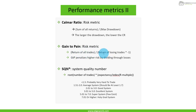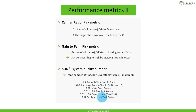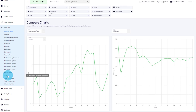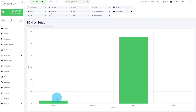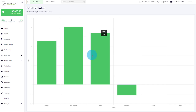Gain to Pain is also a popular risk metric. We take the return of all trades divided by the return of the losing trades. The more risk you're taking — reflected in your losing trade returns — the lower the Gain to Pain ratio. Finally, we have the SQN, the System Quality Number. What's most important is how to interpret it — we have a table in the FAQ with the different scales. In Edgewonk there's a dedicated SQN chart lab where you can compare different setups and strategies by their SQN values.